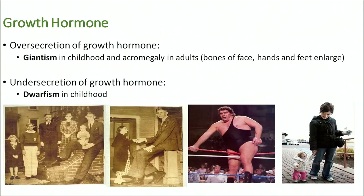Trophic hormones of the anterior pituitary include TSH, FSH, LH, and ACTH. Growth hormone has both trophic and non-trophic effects — it produces growth directly, has diverse metabolic effects, and stimulates production of growth factors by other tissues. Over-secretion of growth hormone causes giantism in childhood, and may affect adults too, while under-secretion causes dwarfism in childhood.